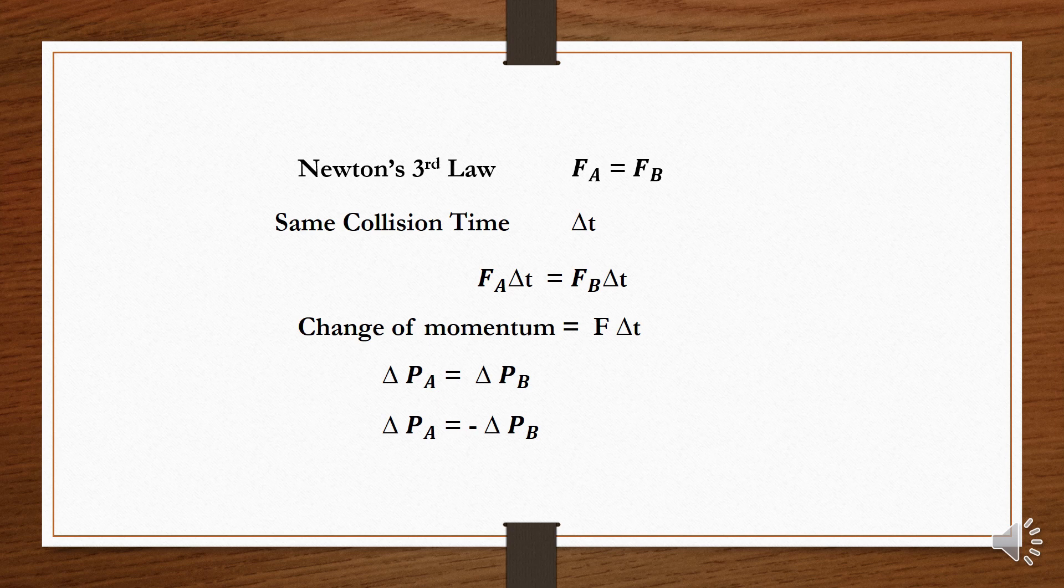That means if we add these two momentum together, the total change of momentum is going to be zero. Which means delta P A plus delta P B is equal to zero. So, provided that no external forces is acting, if we have two objects that collide, the net change in momentum is going to be equal to zero.